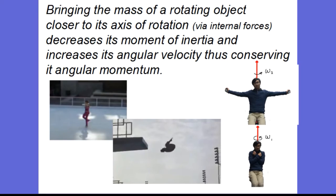So we have seen that bringing the mass of a rotating object closer to its axis of rotation decreases its moment of inertia and increases its angular velocity, thus conserving its angular momentum.